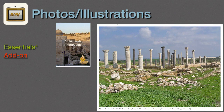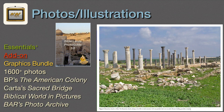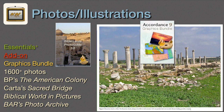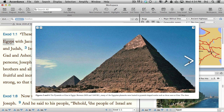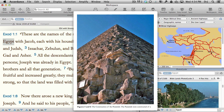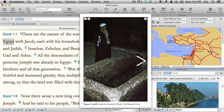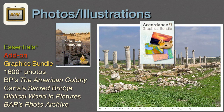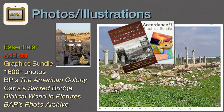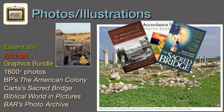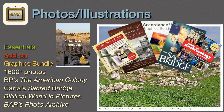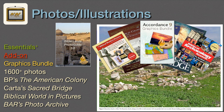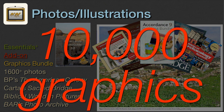Photos and Illustrations. Photo Guide 3 is also included in any Accordance 10 bundle from Essentials up, separately or as part of the graphics bundle. We can see and use over 1,600 high-quality photographs of biblical lands and places. This is only one of the graphics-rich modules we offer. We also have BP's American Colony, Carter Publishers' The Sacred Bridge and many of their other books, Biblical Archaeology Review, and The Biblical World in Pictures. Add these together with our other resources and we have a total of more than 10,000 illustrations for teaching the Bible.